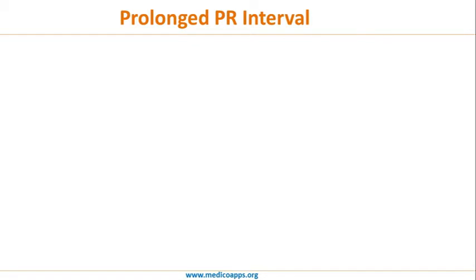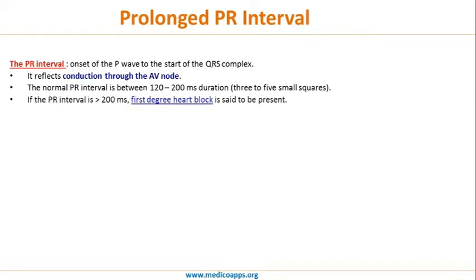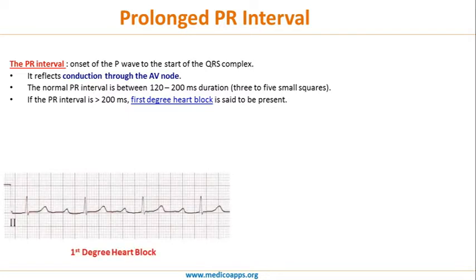The PR interval starts from the onset of the P wave to the start of the QRS complex. It reflects conduction through the AV node. The normal PR interval is 120 to 200 milliseconds, that is three to five small squares. If the PR interval is more than 200 milliseconds — more than five small squares — first-degree heart block is said to be present.